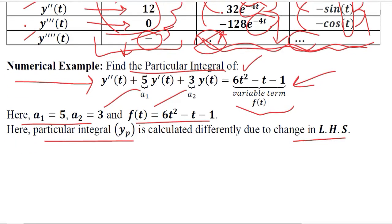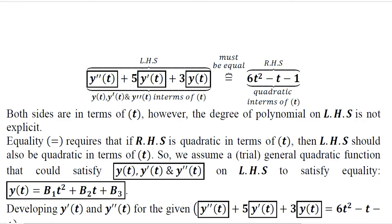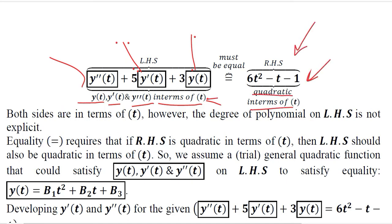The particular integral is calculated differently due to the change on the right-hand side — the left-hand side is now a variable term. The left-hand side is written as it is, and we have boxed the terms: the original function, its first derivative, and its second-order derivative. The function, its first derivative, and second derivative are all in terms of variable t, and on the right-hand side we have a quadratic algebraic expression in terms of t. Since there is an equality between the two sides, and they are both in terms of t, we can compare and extract coefficients — which is why this is known as the method of undetermined coefficients.